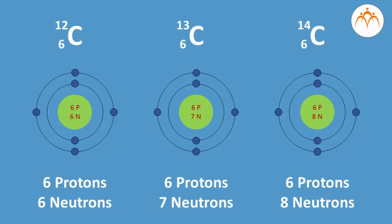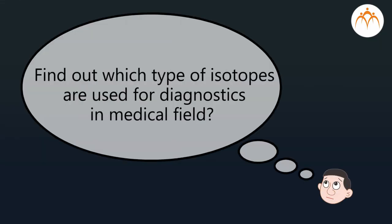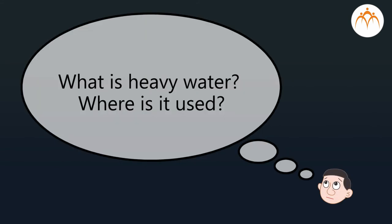Summary: in this video, we learnt about isotopes. Isotopes are atoms of the same element having the same atomic number but different atomic mass number. Now answer the following questions: Find out which type of isotopes are used for diagnostics in the medical field. What is heavy water and where is it used?